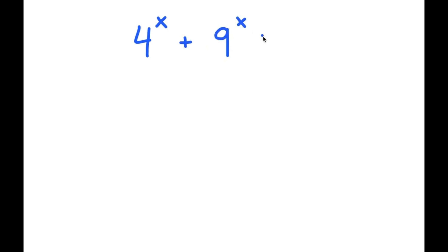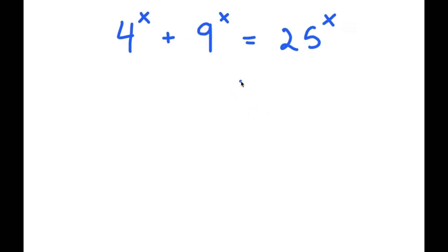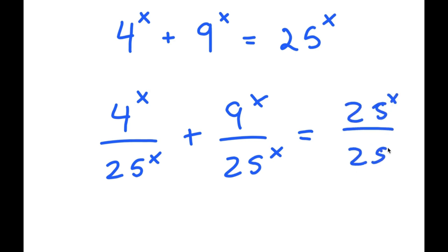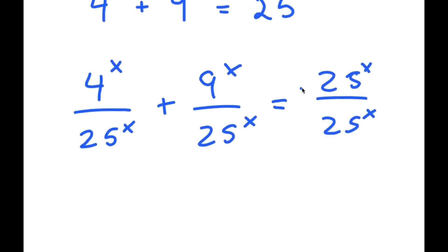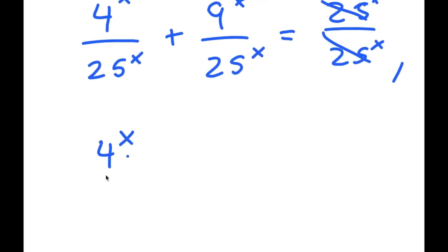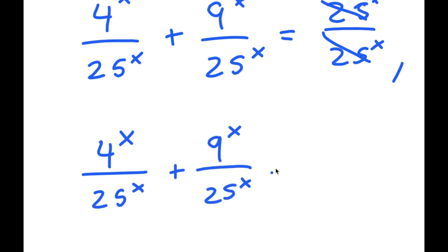In this video, I'm going to solve the equation 4 to the power of x plus 9 to the power of x is equal to 25 to the power of x. To solve this, I'm going to start off by dividing every term by 25 to the power of x. So I get 4 to the power of x divided by 25 to the power of x, plus 9 to the power of x divided by 25 to the power of x, is equal to 25 to the power of x divided by 25 to the power of x.